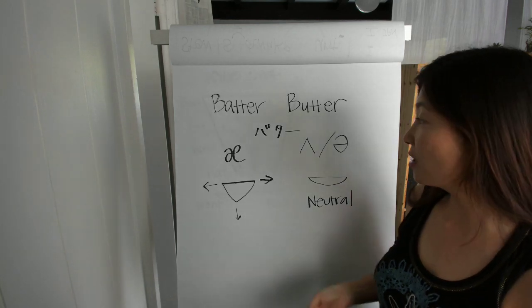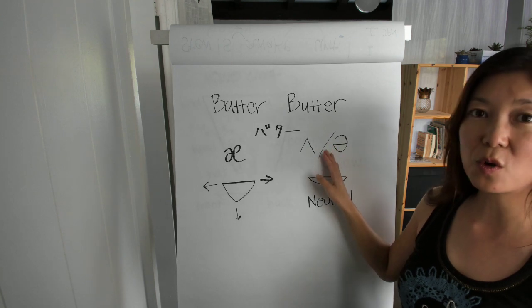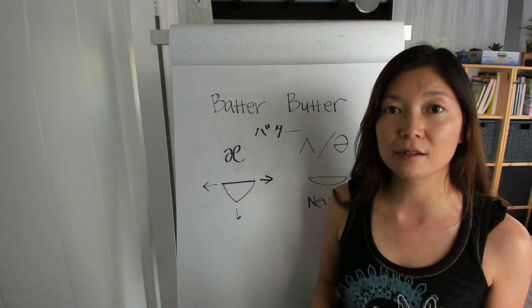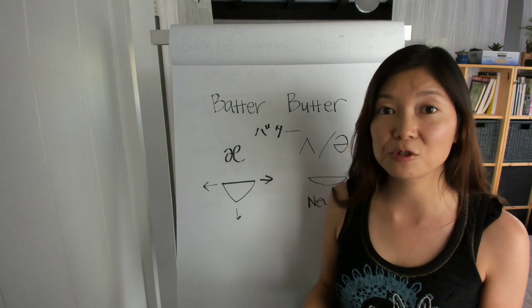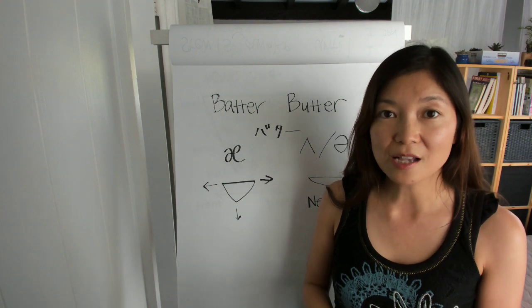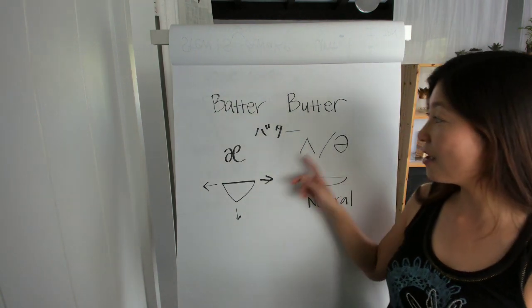Both are called schwa and it sounds like 'uh'. Okay, so this is actually really different from Japanese 'a'. Japanese 'a' is 'ah, ah', and the American schwa is 'uh, uh'.